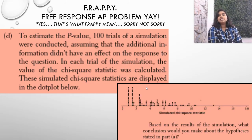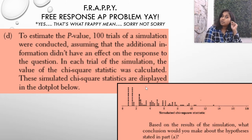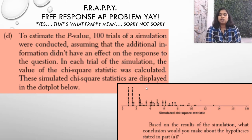But for D, to estimate that p-value, let's say we said, okay, well, we can't quite pull a chi-square for the original data. Let's pull a hundred trials of simulations. So let's pull a sampling distribution, right, a simulated chi-square statistic, assuming that the additional information didn't have an effect on the response to the question. In each trial of the simulation, the value of the chi-square statistic was calculated. These simulated chi-square statistics are displayed in the dot plot below. So again, it was a simulation. So they're making no assumptions. It's a simulation. So based on the results of that dot plot, what conclusion could you make about the original hypothesis that we wrote in A? The null is that there is no difference and that the alternate is that there is some sort of difference.